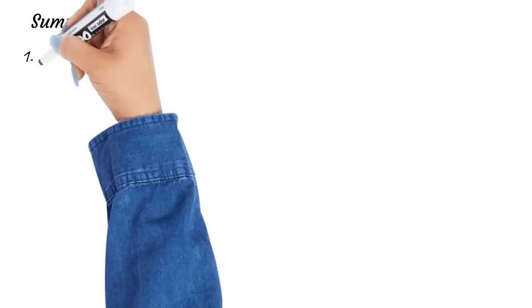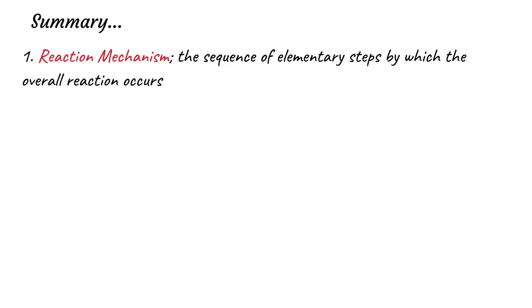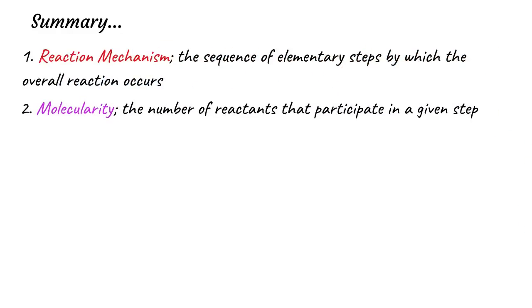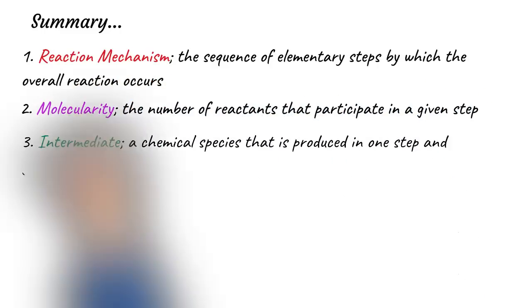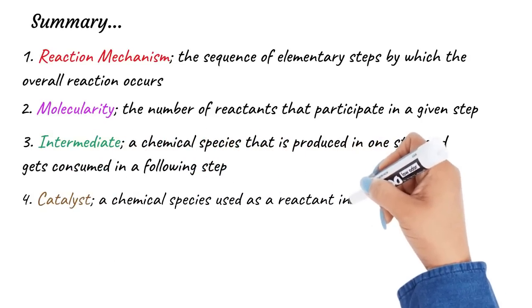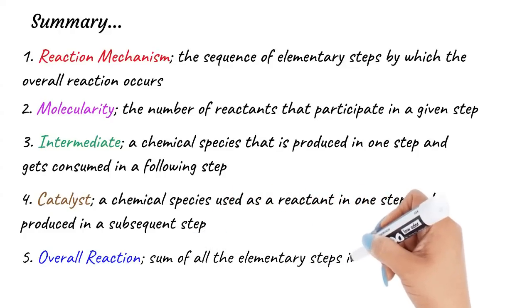In summary, a reaction mechanism is the sequence of single steps, or elementary steps, by which the overall reaction proceeds. Molecularity is the number of reactants that participate in a given step. A chemical species formed in one step and consumed in a subsequent step is called an intermediate. A catalyst is a chemical species used as a reactant in one step and regenerated in a subsequent step as a product. The overall reaction is the sum of all the elementary steps involved.